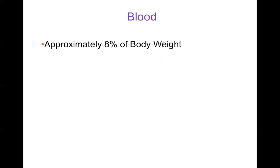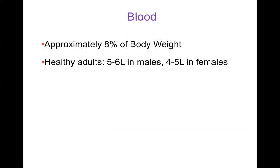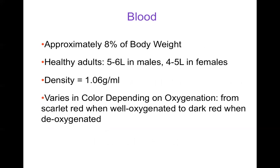First we'll talk a bit about blood. Blood is about 8% of body weight in humans. In healthy adults, there's about 5 to 6 liters of blood in males and about 4 to 5 liters in females — this is just based on size. The density of blood is a little bit over 1 gram per milliliter. The color of blood depends on its oxygenation: when blood is well-oxygenated it's scarlet red, and when it's deoxygenated it gets darker, a more dark red.